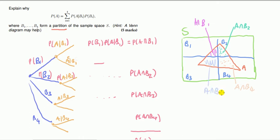So we have them all now. What you notice is that the events A intersection Bi's are mutually disjoint or mutually exclusive — they don't overlap, no intersection between them. And also, if you put them together — the union of them — it gives you back A. In other words, the union of these sets is equal to the event A. And if you apply the third axiom, the countably additive axiom, then you get the result of this proof.